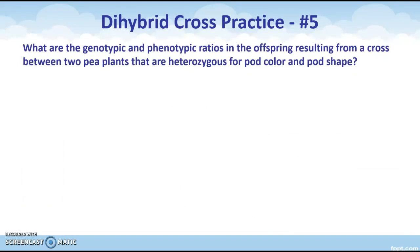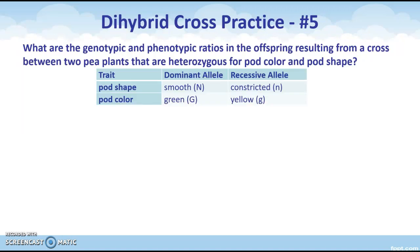The shorter way is a lot easier. Now we're going to look at two different genes in pea plants. Number five asks: what are the genotypic and phenotypic ratios in offspring from a cross between two pea plants that are heterozygous for pod color and pod shape? From the trait table, pod shape uses the letter N — smooth or constricted — and pod color uses the letter G — green or yellow. Both parents are heterozygous for both traits, so each parent is capital G, lowercase g, capital N, lowercase n.